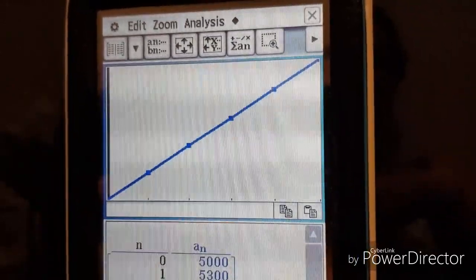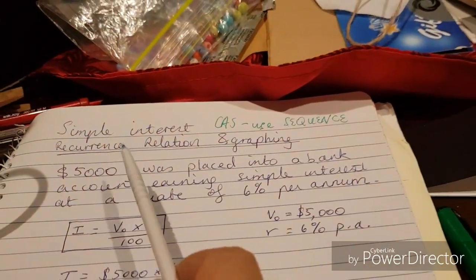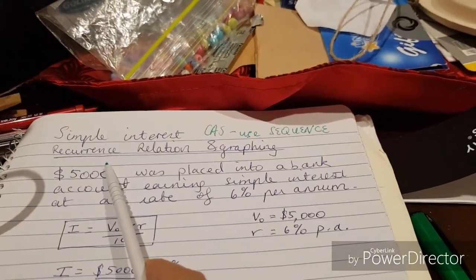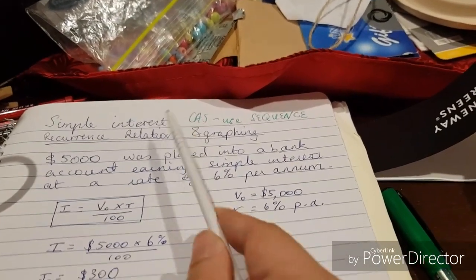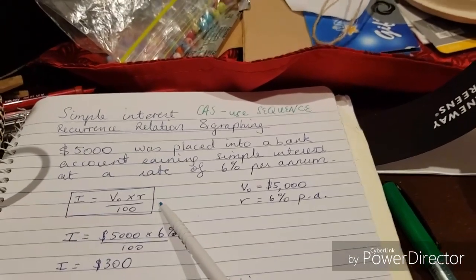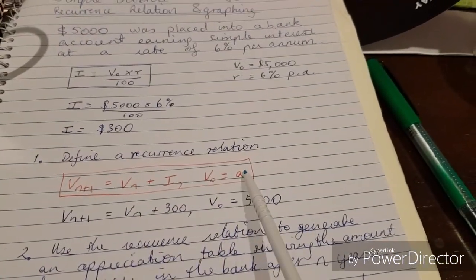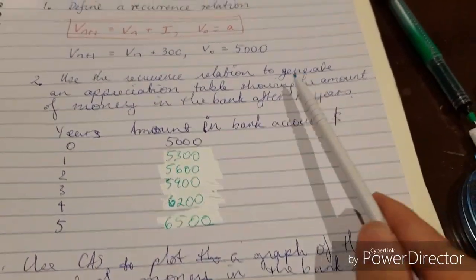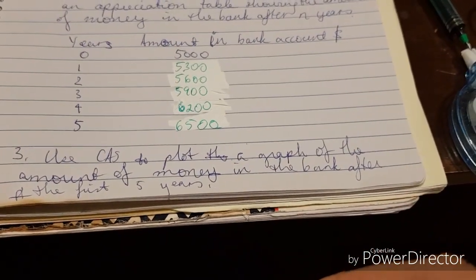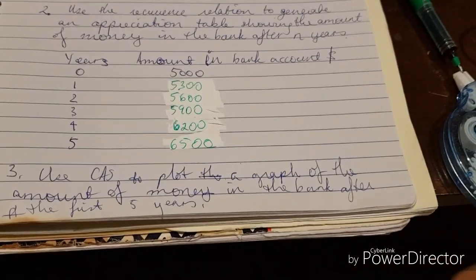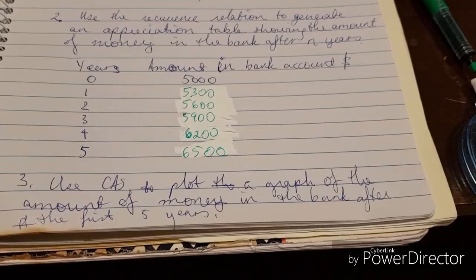All right, so let's have a recap. Today we have learned how to do simple interest using recurrence relation and graphing with a Casio class pad CAS calculator. We've learned how to calculate the simple interest earned each year, how to write a recurrence relationship, put it into the CAS calculator, generate an appreciation table, and how to plot it on a graph. Thanks for listening, this has been Education with Eleanor. Hope to see you next time. Bye!